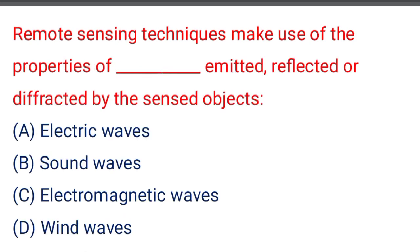Next question: remote sensing techniques make use of the properties of electromagnetic waves emitted, reflected or diffracted by the sensed object — option A: electric waves, option B: sound waves, option C: electromagnetic waves, option D: wind waves. The correct answer is option C: electromagnetic waves.